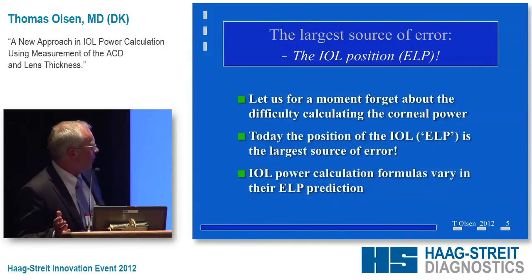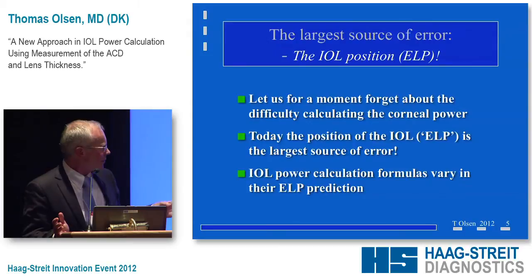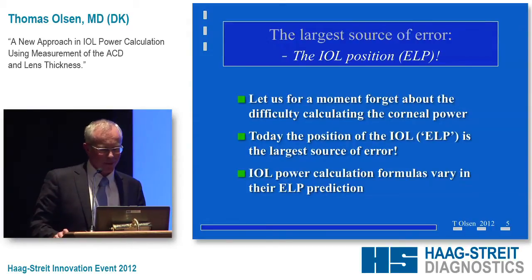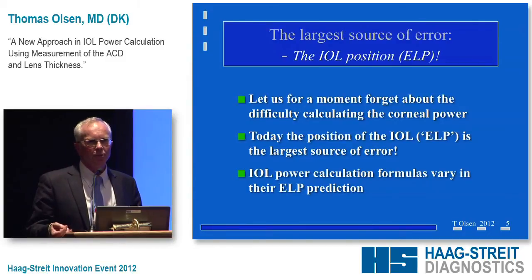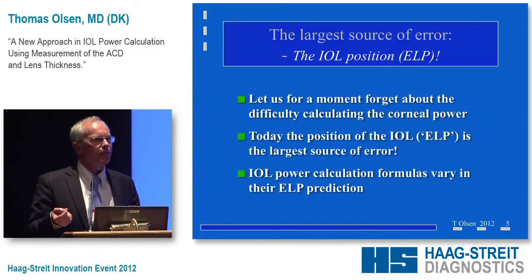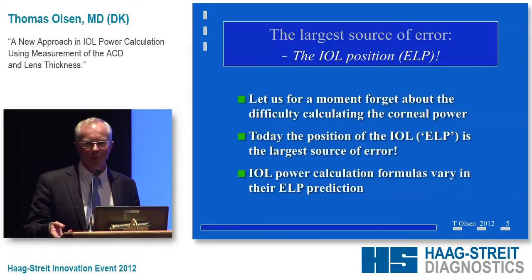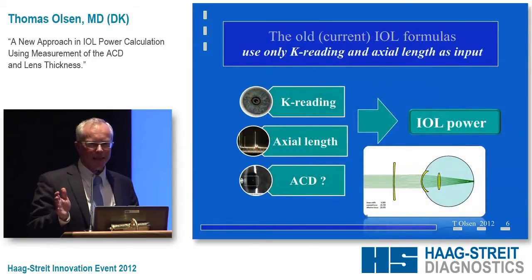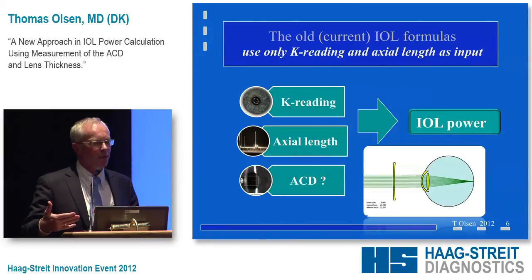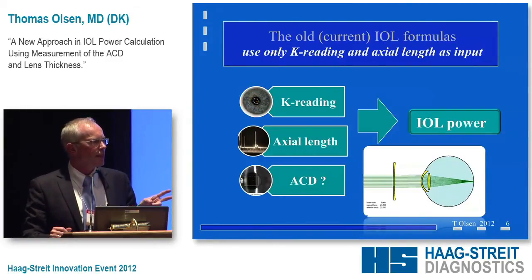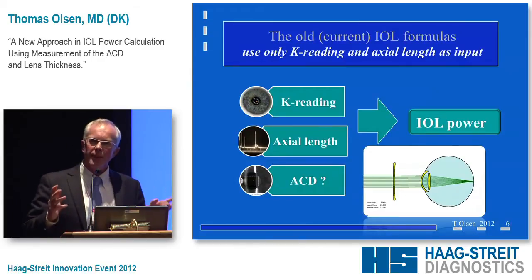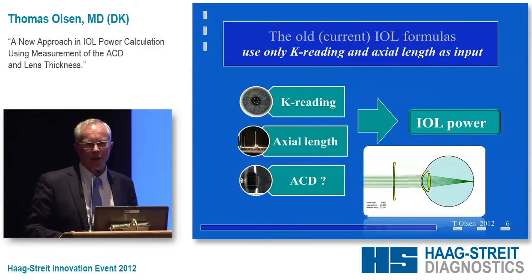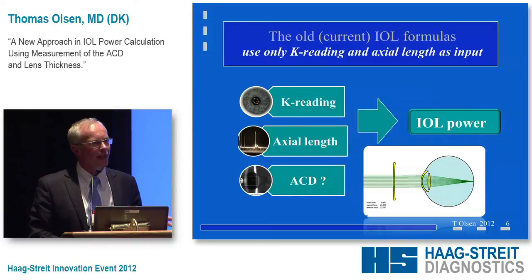Let us for a moment forget about the problems when we deal with corneal power, and I won't talk about post-laser cases. One of the major sources of error is actually how the IOL ends up in the eye. Sam Maskett was alluding to the fact that we don't know this — well, I'm going to tell you how we can actually predict that. The formulas vary precisely in this regard: how they do the ELP estimation from the K reading and the axial length.